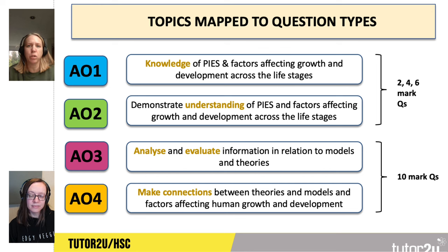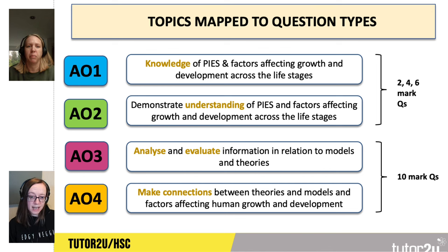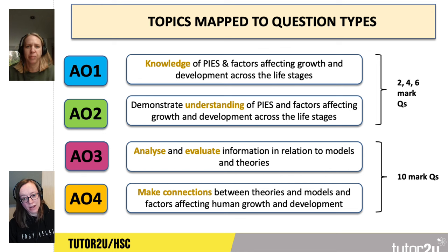So just for students thinking about the topics, how are the topics mapped to the question types? You've got assessment outcomes 1, 2, 3 and 4. The first one is a knowledge recall assessment outcome, so that's about PIES and factors affecting growth and development across the life stages. The second one is understanding — recall with a little bit more detail on the same topics. So that's your two, four and six mark questions. Assessment outcome 3 is analysing and evaluating information in relation to theories and models. And assessment outcome 4 is about making connections between those theories and models and how they relate to growth and development — so that's your ten mark questions.